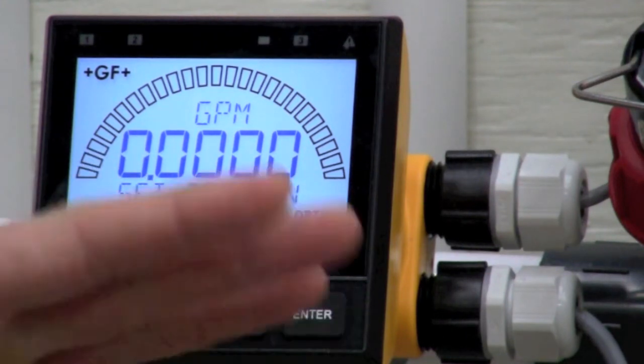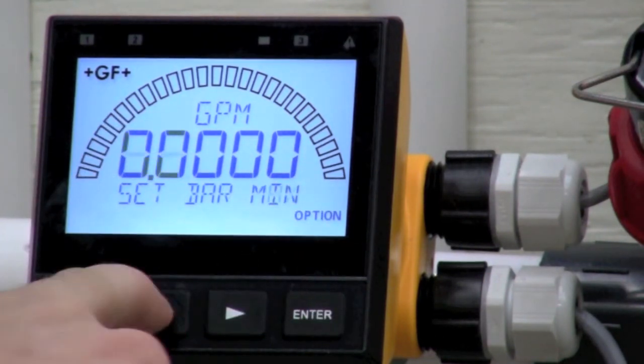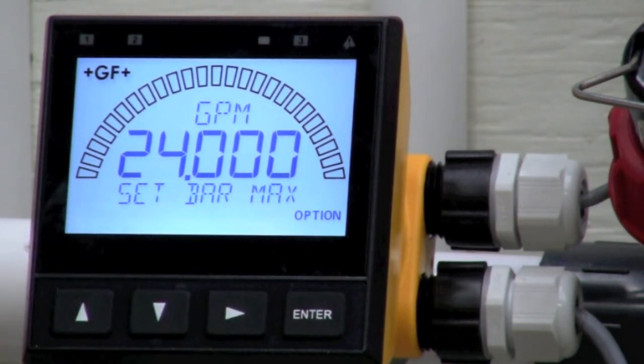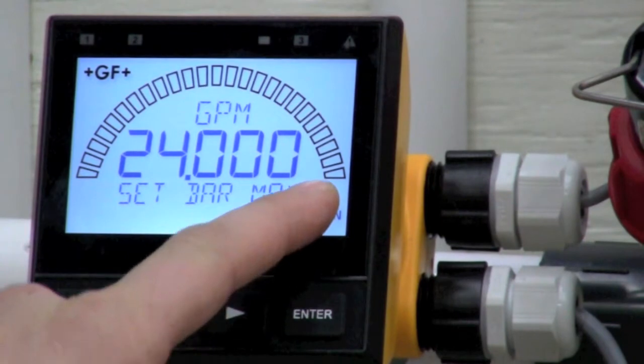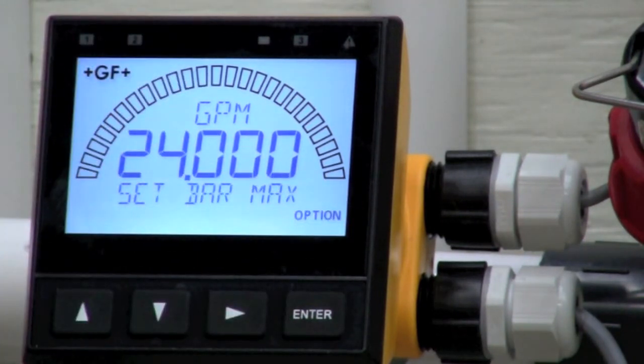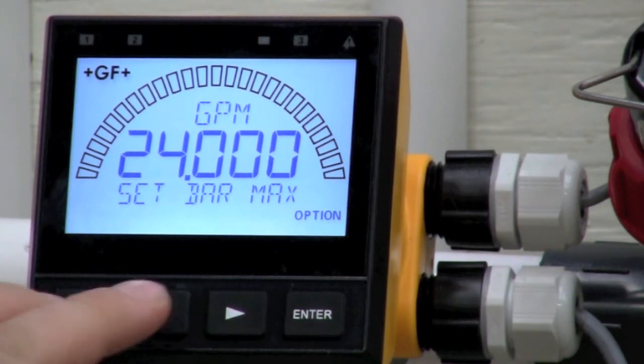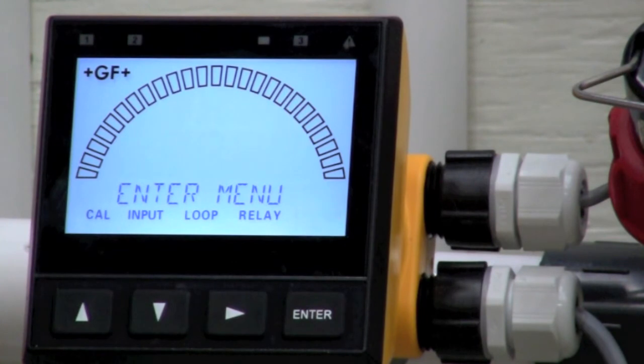I have this set for zero. Maximum bar, 24. That's where my set point is. Now this will not peg until I hit 24 GPM. However, my 4 to 20 will still peg once I hit 15 GPM. That's how you set that. I'm going to hit back out on this.